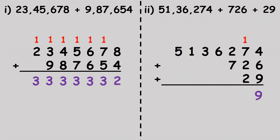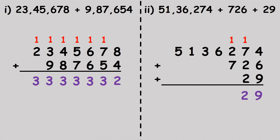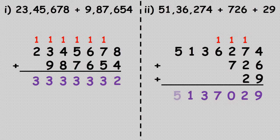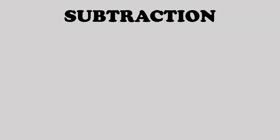Next column: one plus seven is eight, eight plus two is ten, ten plus two is twelve — carry one, write two. Next: one plus two plus seven is ten; six plus one is seven; then five and three with no other number beneath, so we write three, five, and one as they are. The answer we get is fifty-one lakh thirty-seven thousand and twenty-nine.